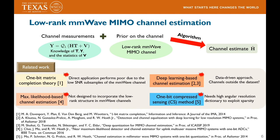Prior work has focused on 1-bit MIMO channel estimation using tools such as deep learning, maximum likelihood, or 1-bit compressed sensing. Interestingly, there is no prior work that has exploited the low-rank nature of mmWave channels in a 1-bit setting. Although 1-bit matrix completion has been studied from a theoretical perspective, direct application of these ideas to a real mmWave setting can result in poor performance. So clearly, there is a need to develop new techniques for low-rank channel estimation in 1-bit receivers.